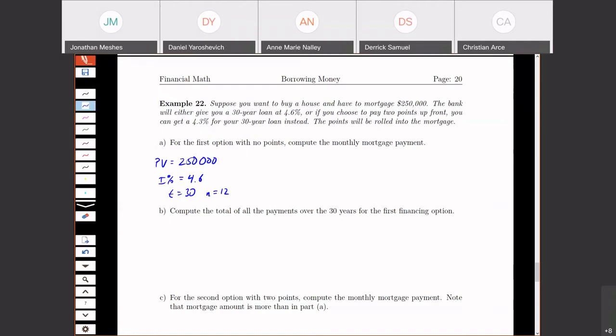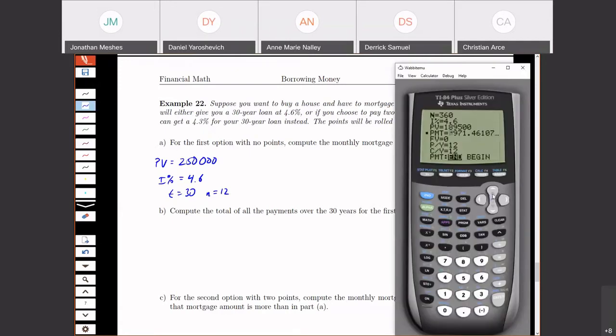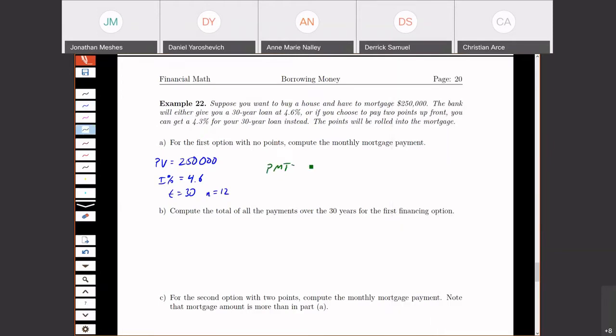When I go to my solver, I'm going to do 12 times 30. Interest rate is the same as it was in the last example. We're borrowing $250,000. Final value is zero. Payments per year is 12. Now let's solve for a monthly payment and I get $1,281.61.